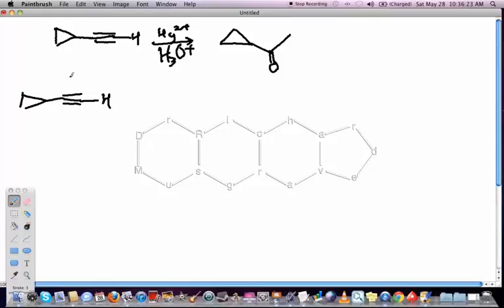So we've got our alkyne. The first step is the addition of H plus to the triple bond, which is very much like the addition of H plus to a double bond. So what happens is that we can have two things happen, but only one actually happens.